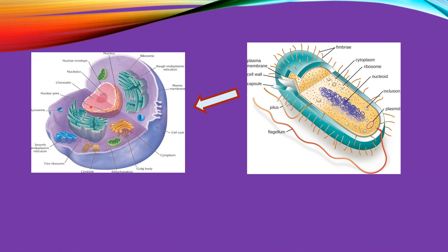Eukaryotes have double membrane-bounded structures. The genetic material in prokaryotes is present in the center of the cell without any nuclear-bounded structure, while in eukaryotic organisms all the genetic material is bounded by a membrane called the nuclear membrane or nuclear envelope. Other double membrane-bounded organelles are present in eukaryotic organisms but absent in prokaryotic organisms.